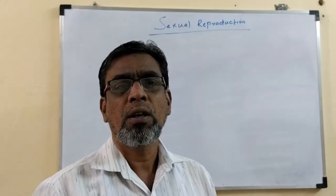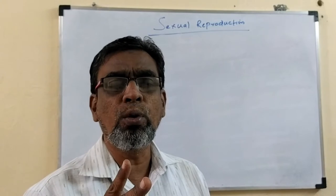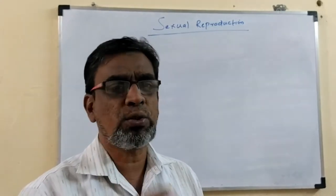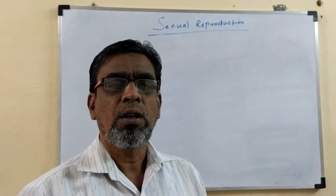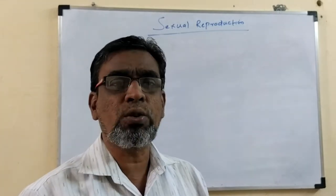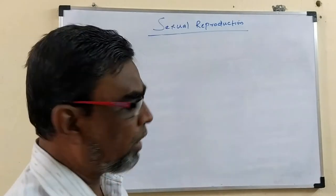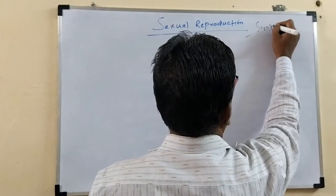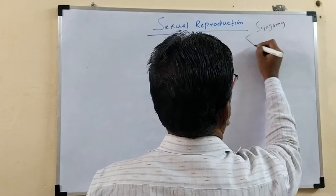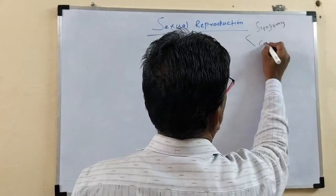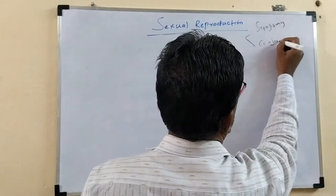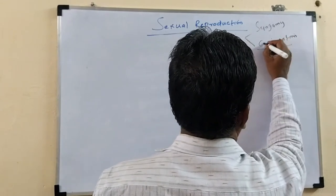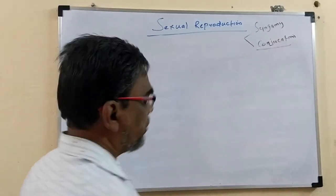What is sexual reproduction? It is the union of two gametes, the fusion of two gametes. In sexual reproduction, there are two types we have already studied: one is called syngami and one more is called conjugation.